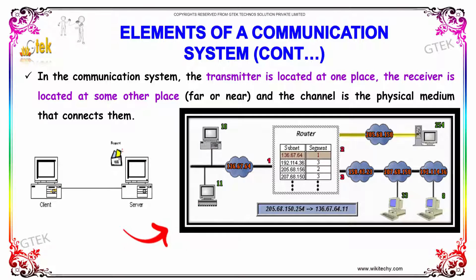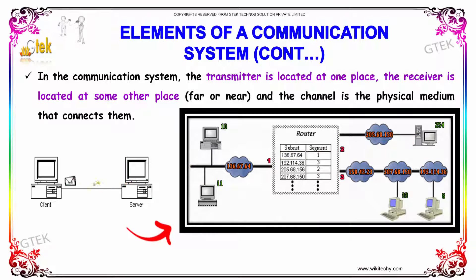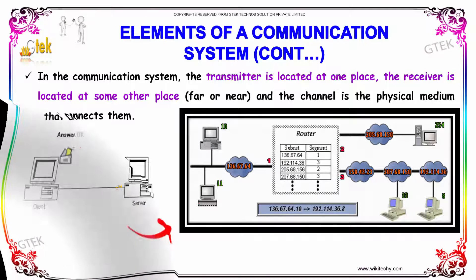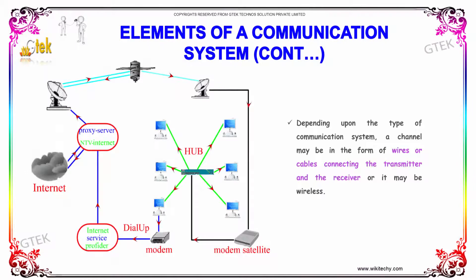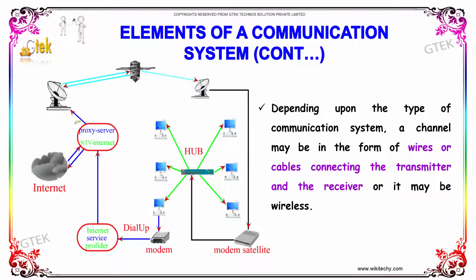Here is a demonstration of the transmitter and receiver through a medium. Depending upon the type of communication system, a channel may be in the form of wires or cables connecting the transmitter and receiver, or it may be wireless.